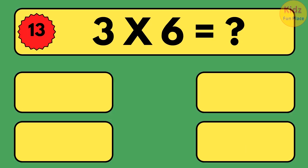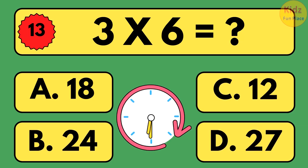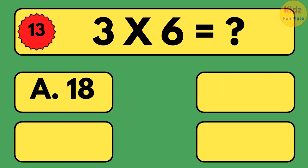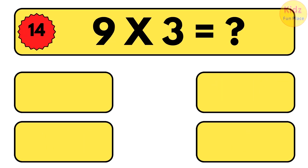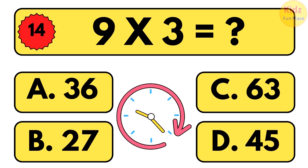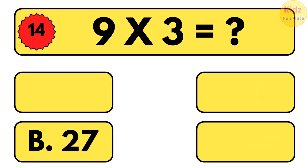3 times 6 is equal to what? 3 times 6 is equal to 18. 9 times 3 is equal to what? 9 times 3 is equal to 27.